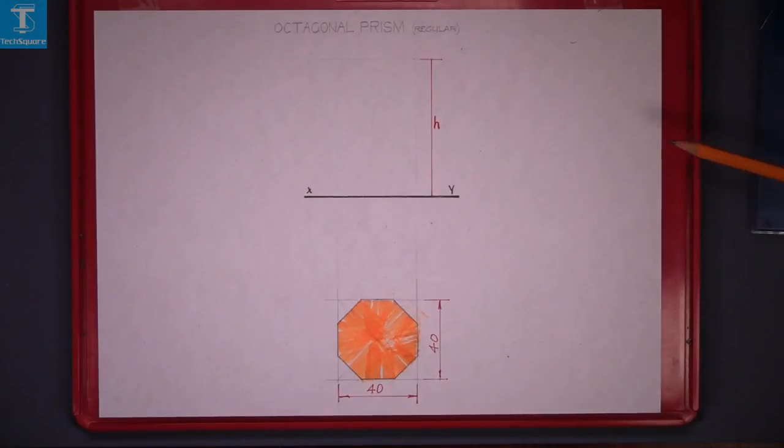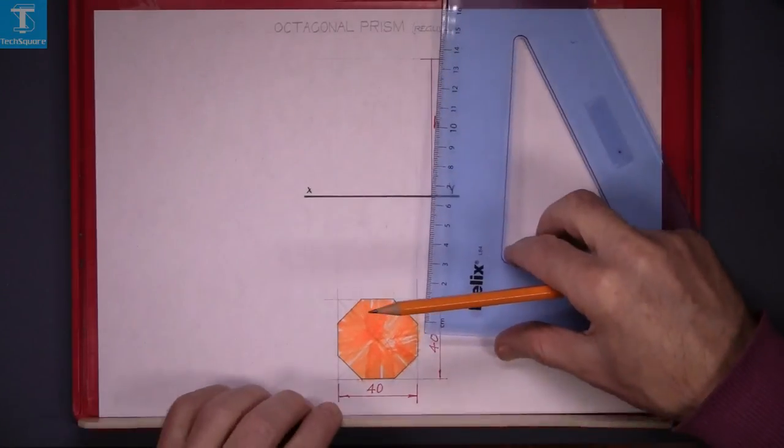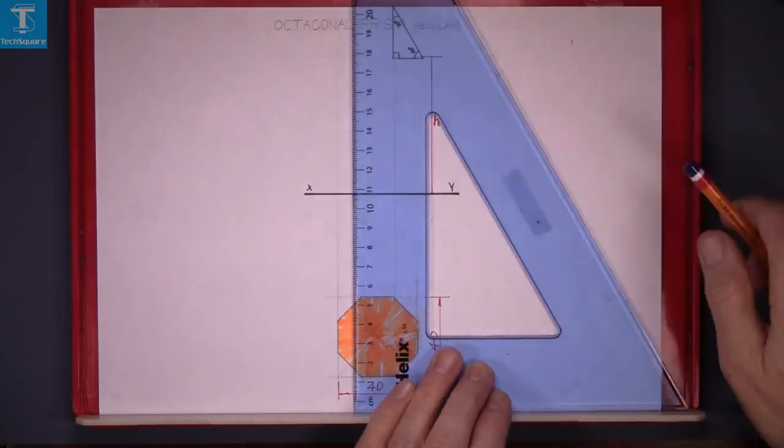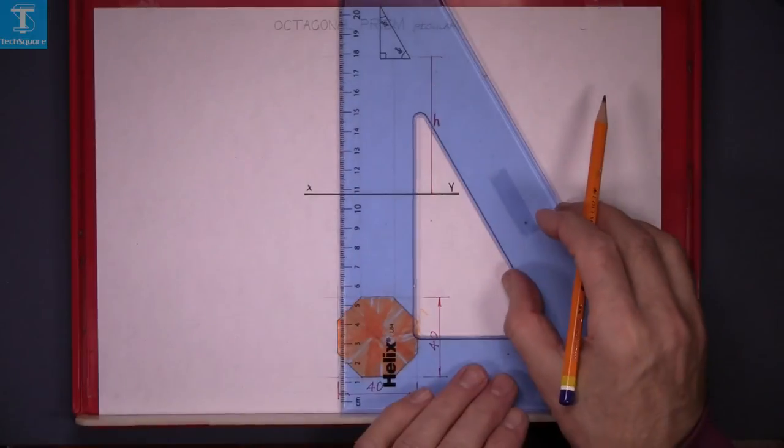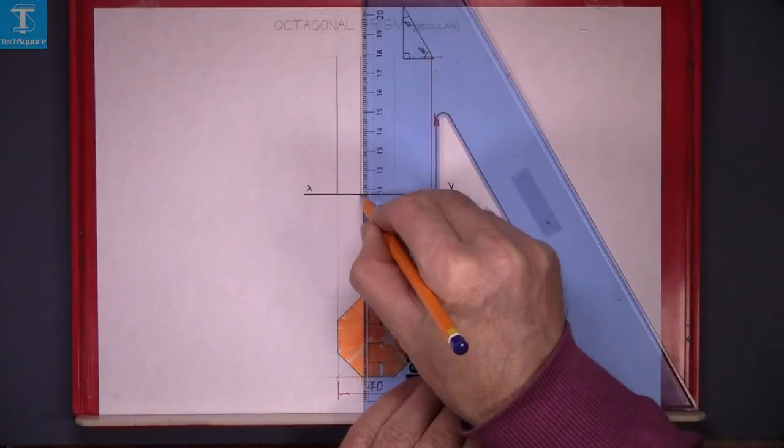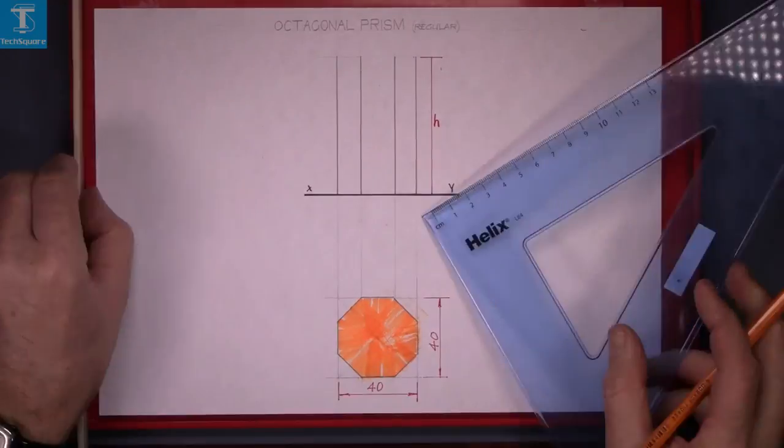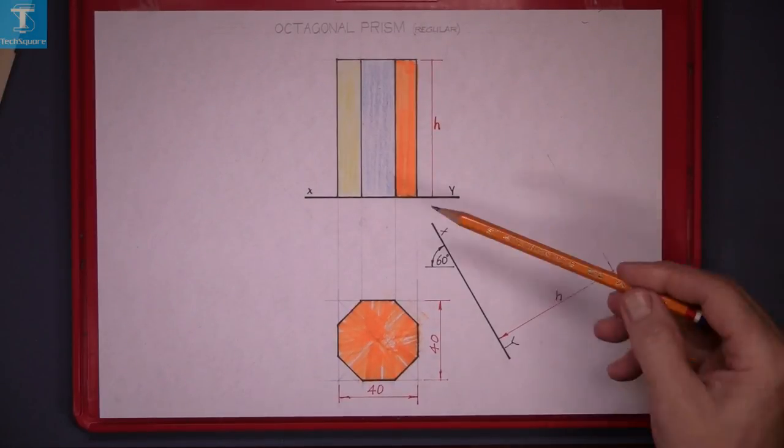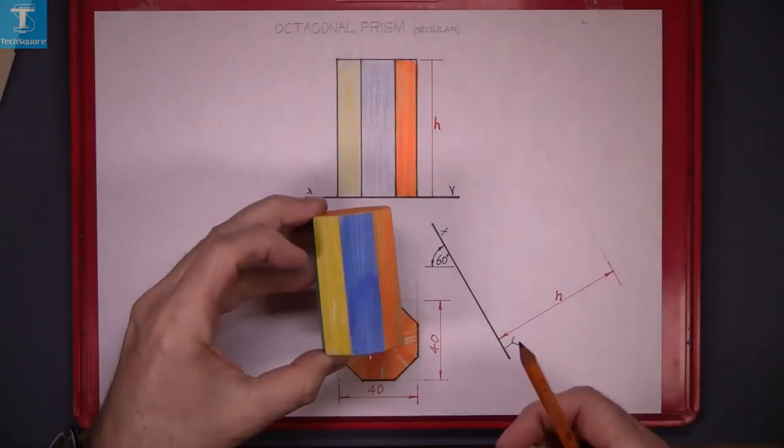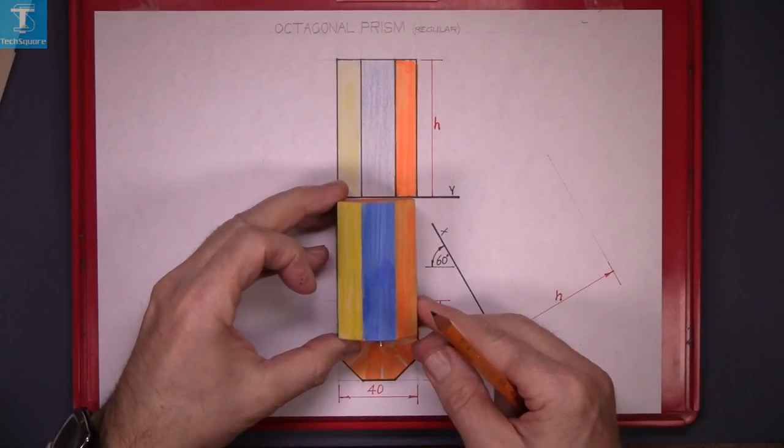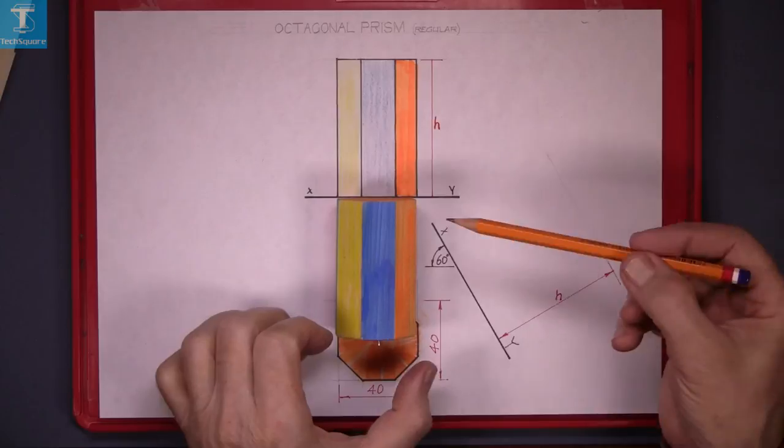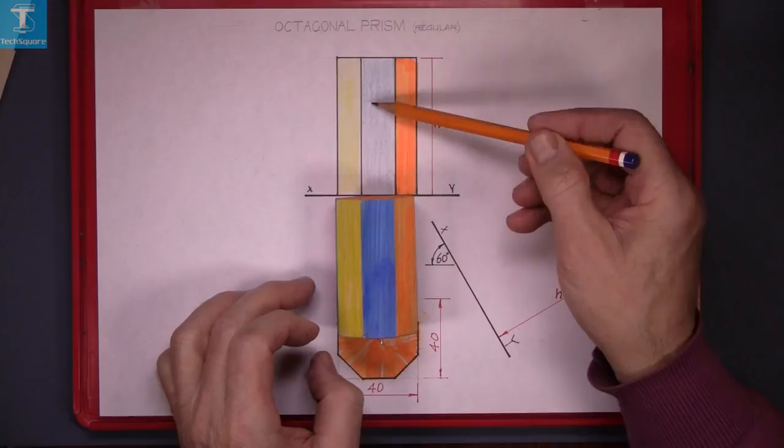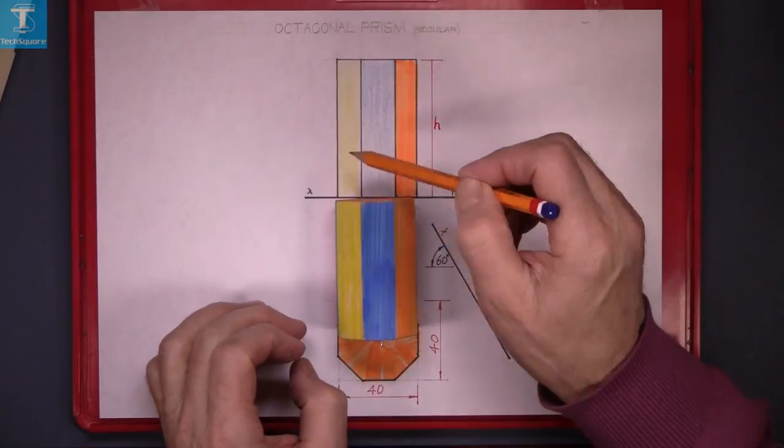So to do that we project the points up. Drawing all the points up to the elevation, and taking the height and lining the four lines on the top. That's the view colored in and that's the way it was on the model. The orange surface and the blue surface and the yellow surface.